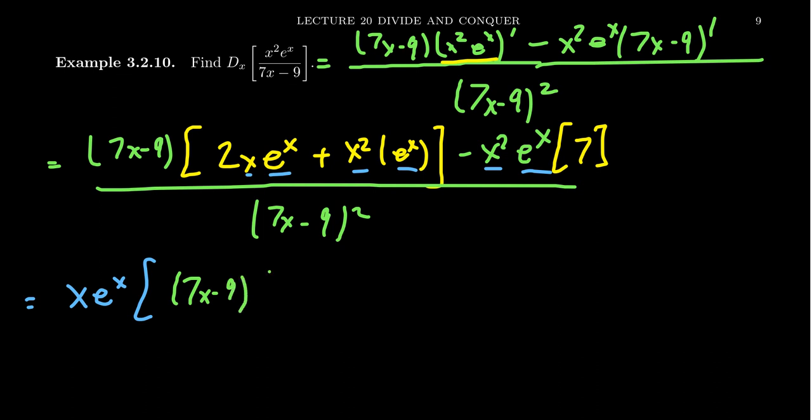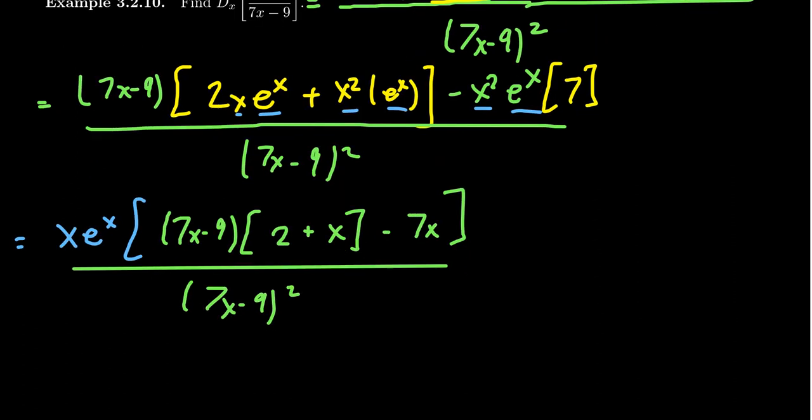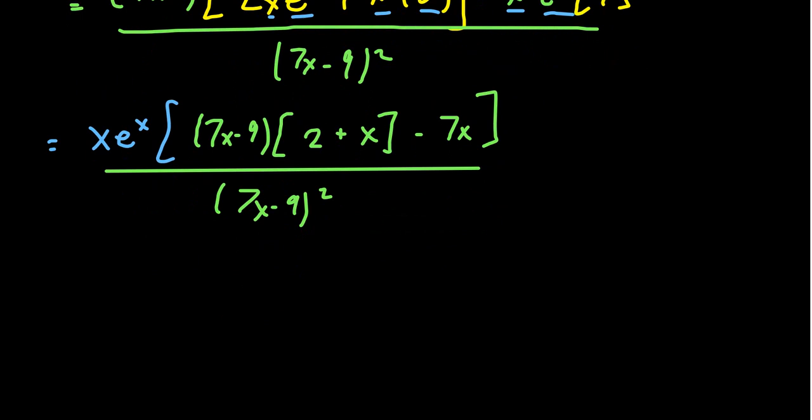That then leaves behind, we have the 7x minus 9. We haven't multiplied that through yet. With the 2x e to the x, we took away the x and the e to the x, that's left behind a 2. With the x squared times e to the x, we took away an x e to the x, that leaves behind an x like so. And then for the other piece, again, we took away an x and e to the x, so we have negative 7 right here. This all sits above the 7x minus 9 squared. So we took out the x e to the x. Those are good common factors. There's really not much else to do in the numerator in terms of factorization. So we're going to have to multiply that thing out.